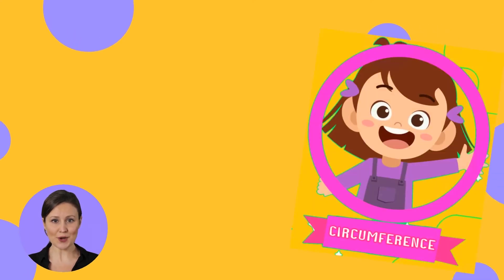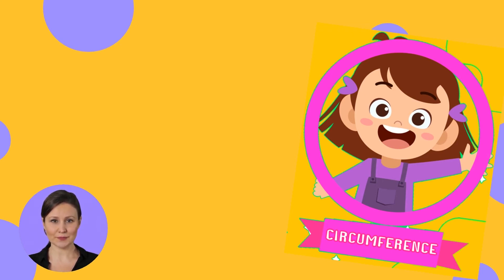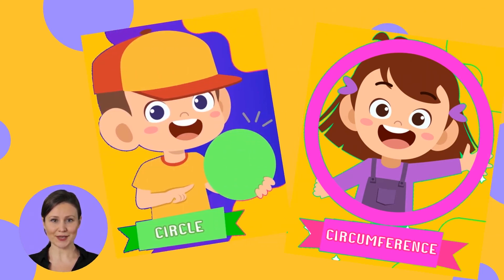Finally, if we draw a line that surrounds a ball all the way around, that is called a circumference. Look at the purple circumference that is holding the little girl. And all the space inside that curved line is called a circle. The boy is holding a green circle. Can you see it?